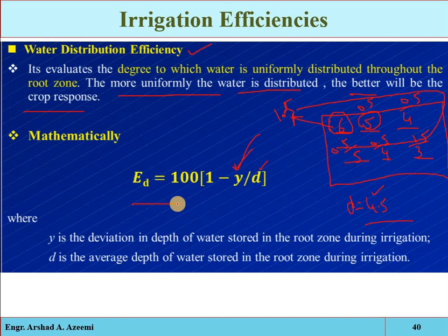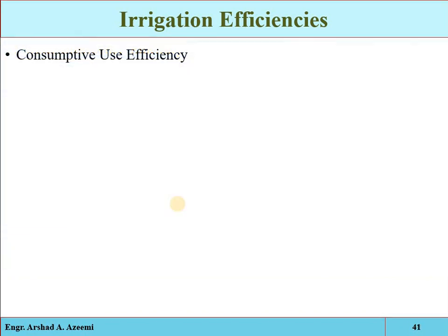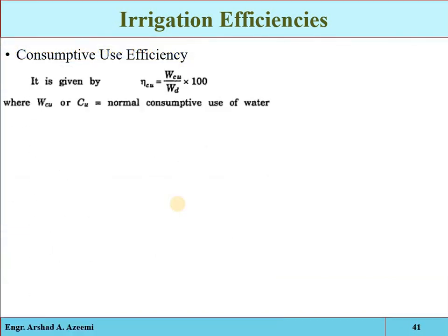Distribution efficiency provides a measure for comparing various systems or methods of water application — for example, comparing different sprinkler systems such as pivoted, centrifuge, or pop-up sprinklers to determine which system is more efficient in terms of uniformity.